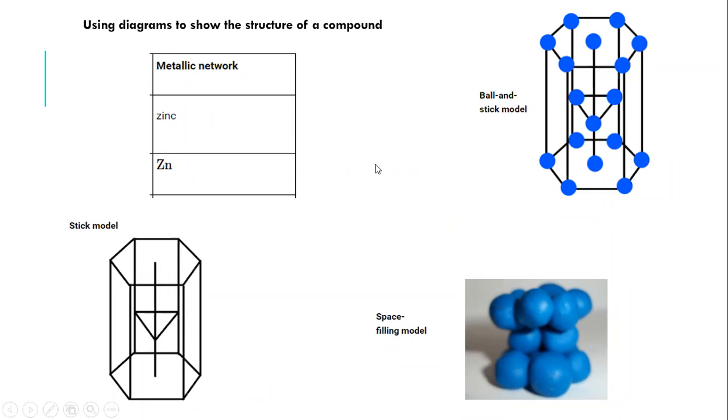Next class, we will carry on with more examples. If you click on the website link, you can find lots of shapes of different compounds we use — like caffeine, sugar, glucose, DNA structure — three-dimensional shapes. Just click on these websites.